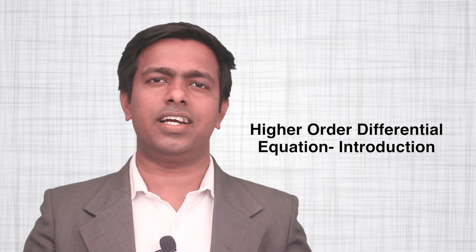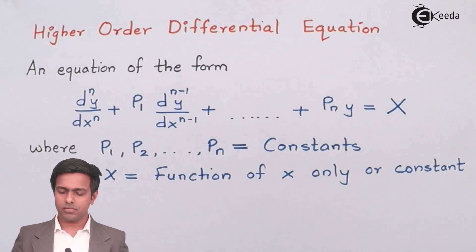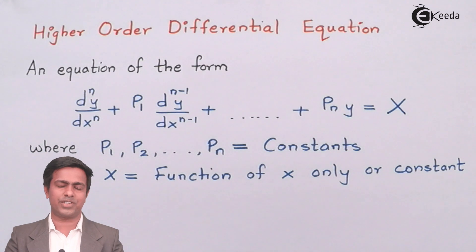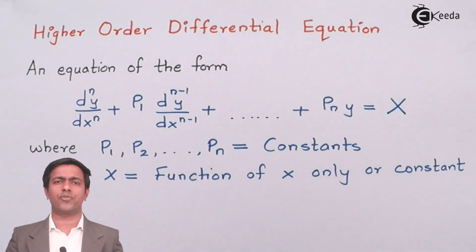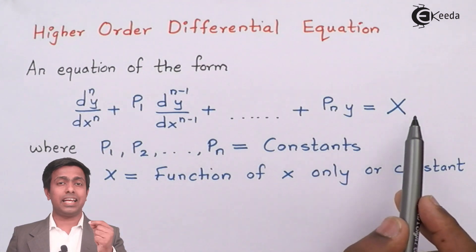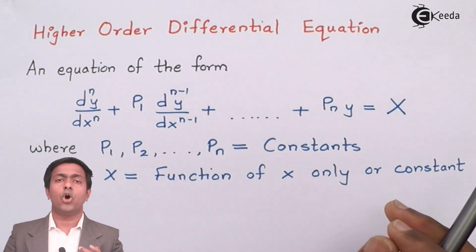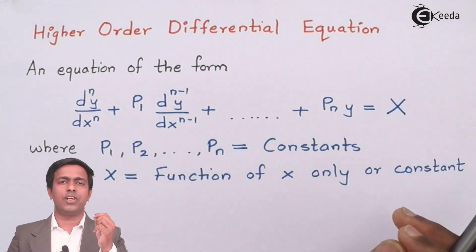So now we are going to see the introduction — how that equation is represented and how to identify such type of equations. You can see here that I have written the definition of higher order differential equation with constant coefficient. The equation has differential terms. Whenever we have any equation having terms like dy/dx or d²y/dx², these are called differential terms, and such an equation is called a differential equation.